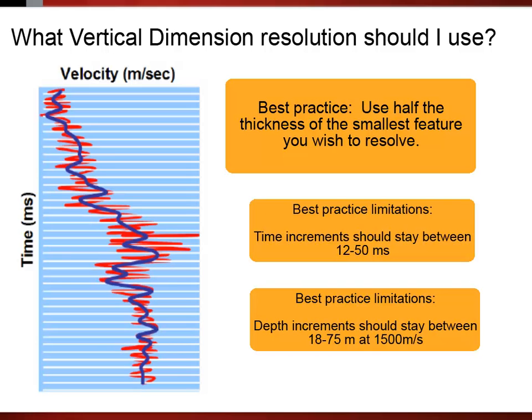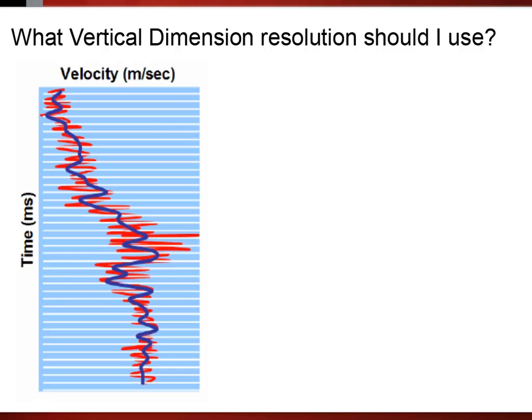The well log here is a good example of this. The blue, smooth velocity log is a more appropriate gauge to the vertical grid spacing in time than the red, which shows too many fine variations.